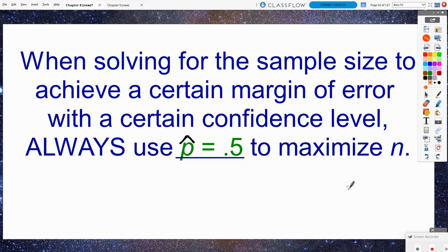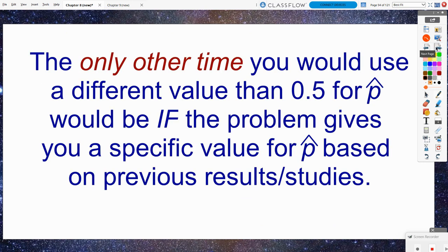So when solving for a sample size to achieve a certain margin of error with a certain confidence level, always use p hat to be 0.5 to maximize that sample size. The only other time you would not use 0.5 would be if the problem gives you a specific value for p hat based on previous results or previous studies. They may say previously another study was done and they found this result. Then it's fair game to be able to use that number because maybe it's still very similar to what it was previously. Or, best case scenario, you just say, I'm just going to use 0.5 because 0.5 is always going to make the sample size as big as it possibly needs to be able to achieve that certain margin of error.